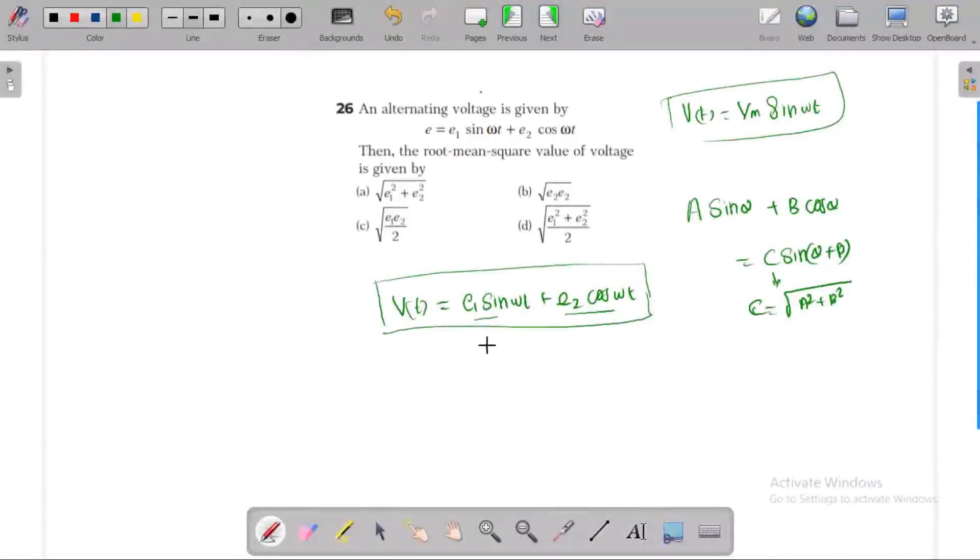So E1 is a, E2 is b. We get Vm equals root of E1 squared plus E2 squared, times sin omega t plus phi. So we get the Vm value.